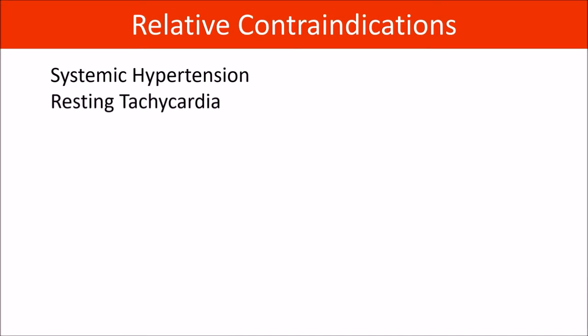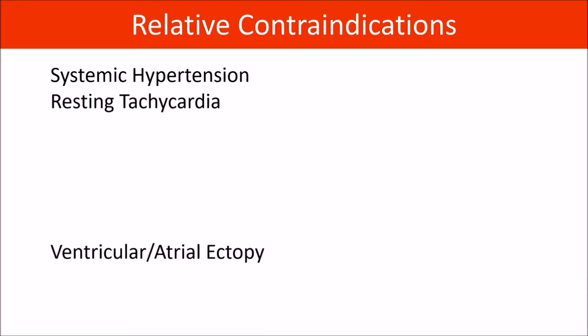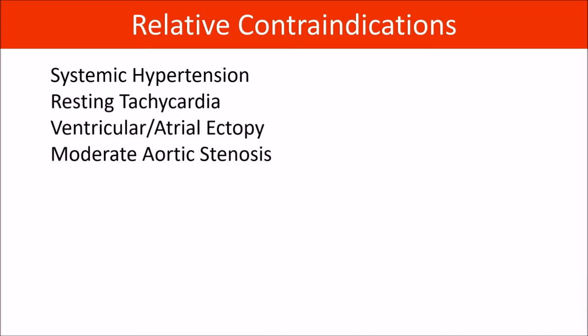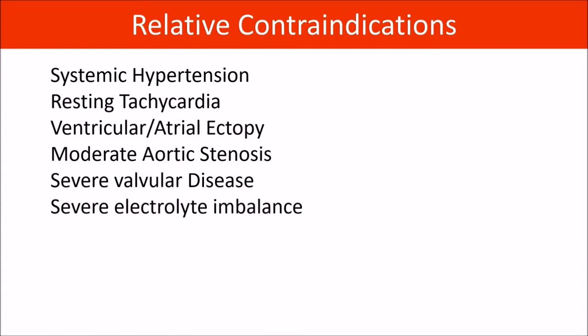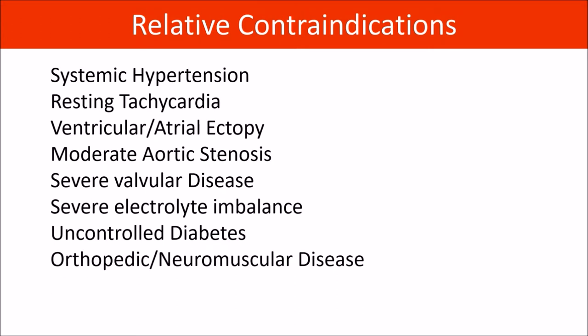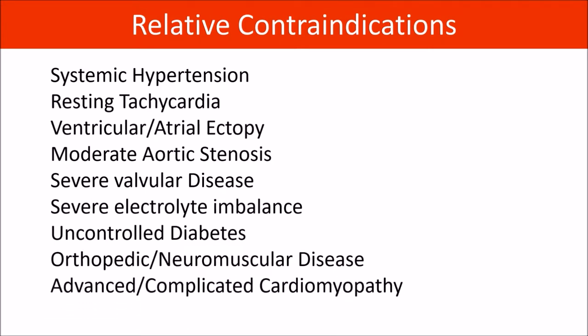There are also a few relative contraindications, including systemic hypertension, resting tachycardia, ventricular or atrial ectopy, moderate aortic stenosis, severe valvular diseases, severe electrolyte imbalances, uncontrolled diabetes, orthopedic or neuromuscular diseases, and advanced or complicated cardiomyopathies. Do any of these apply to you?